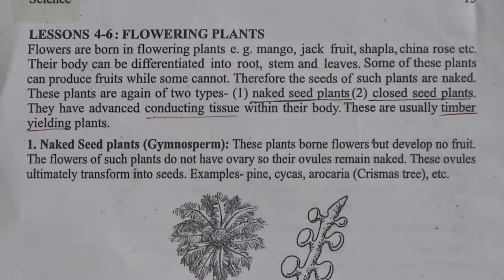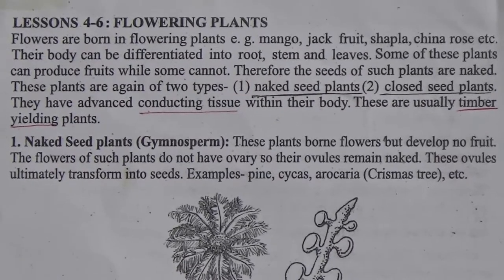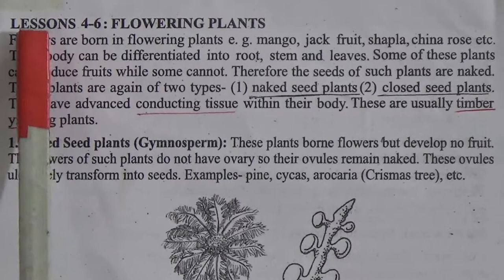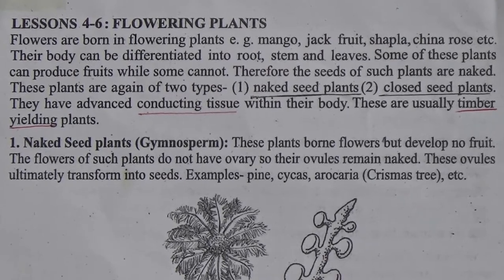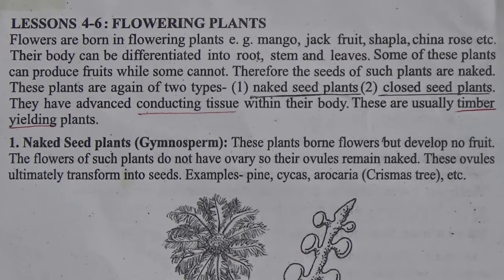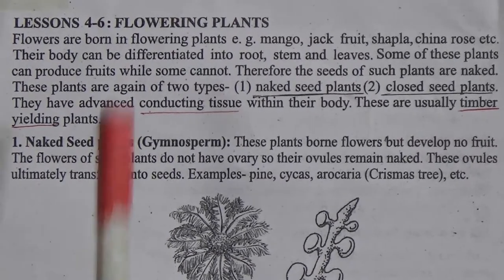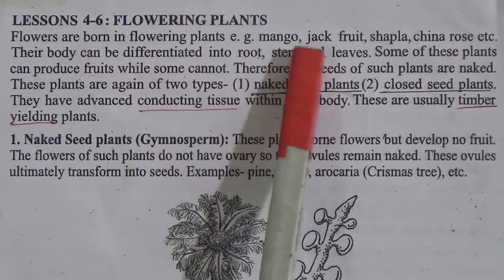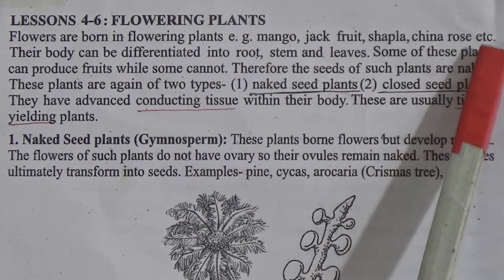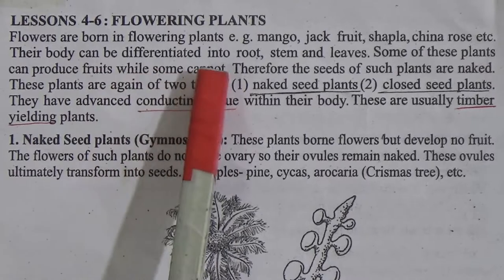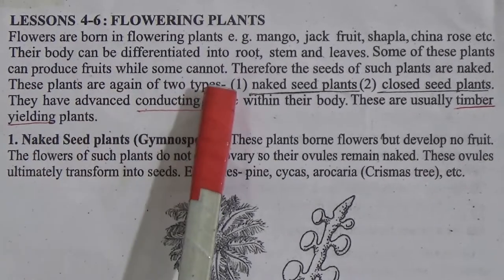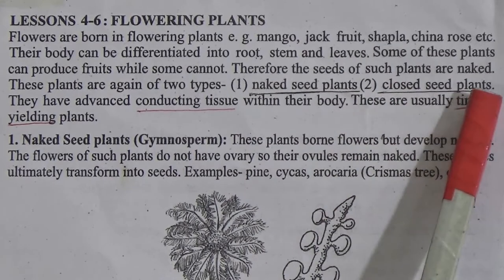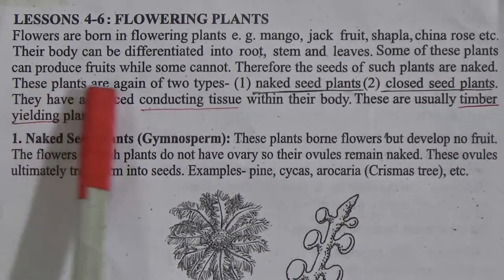In lesson 4 to 6 we discuss flowering plants. This chapter is called 'Living Organism', Chapter 2 from your book. You know plants are mainly two types: one is flowering plants and the other is non-flowering plants. The plants which bear flowers are called flowering plants. Examples include mango, jackfruit, china rose, etc. Their body can be divided into root, stem and leaves. Some of these plants can produce fruits while some cannot.